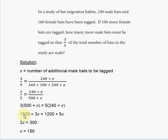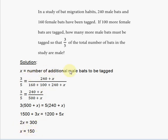Distributing, you get 1500 plus 3x equals 1200 plus 5x. Subtract 3x from both sides and subtract 1200 from both sides: 300 equals 2x. Divide both sides by 2, and X equals 150.